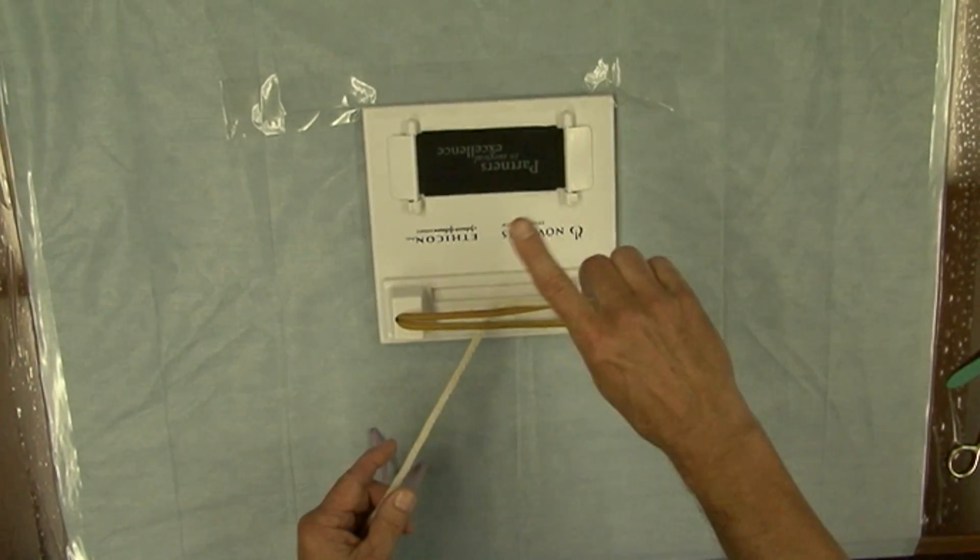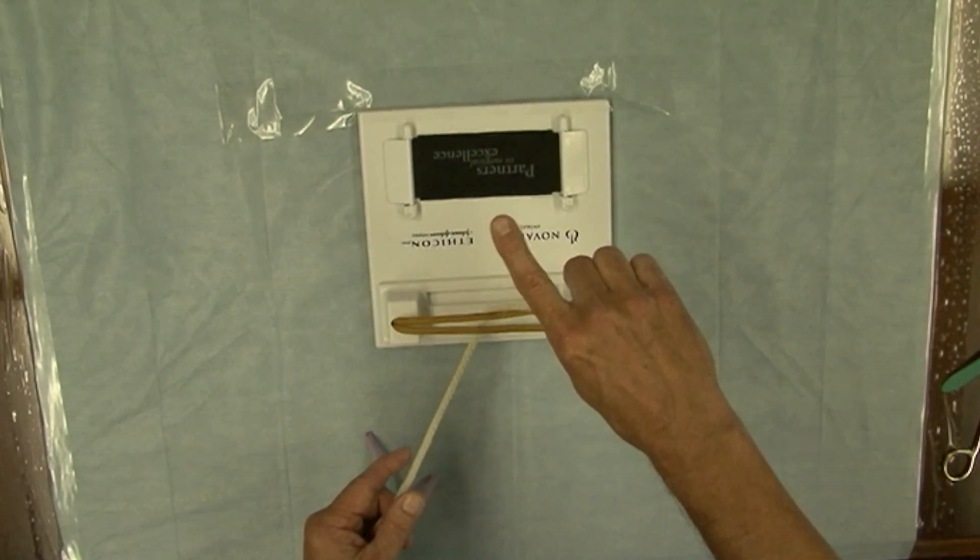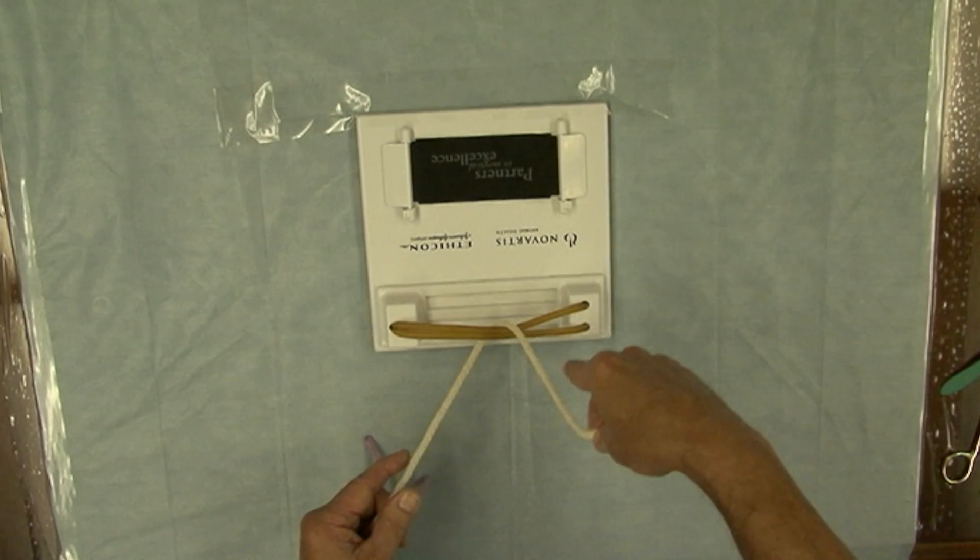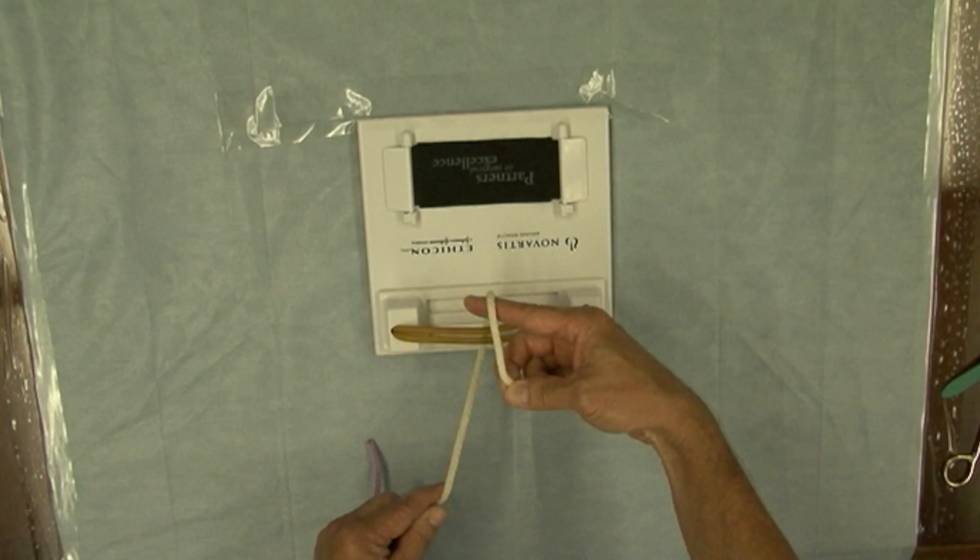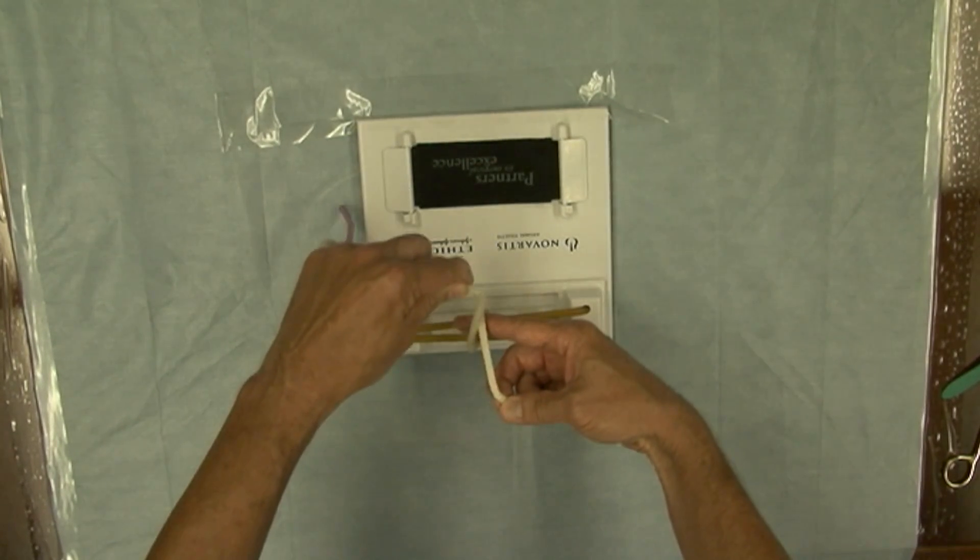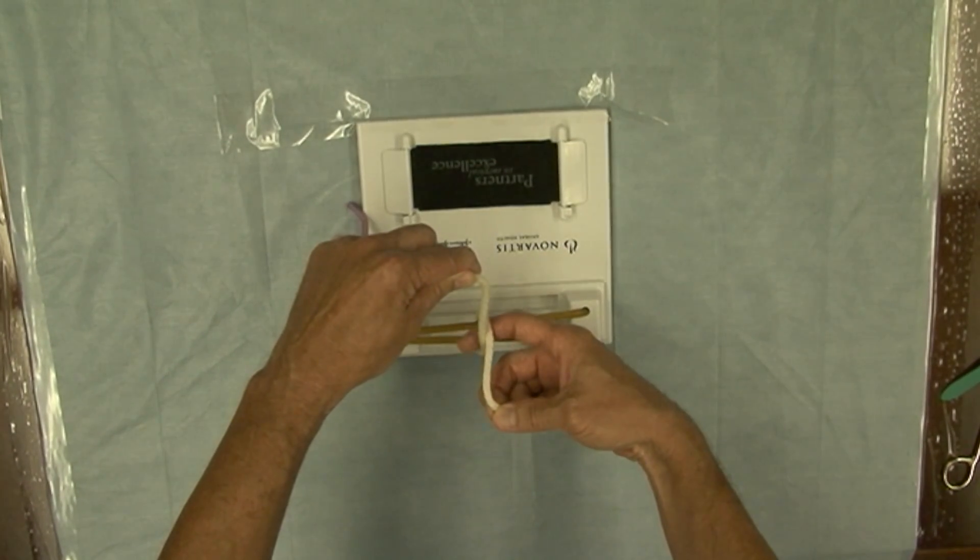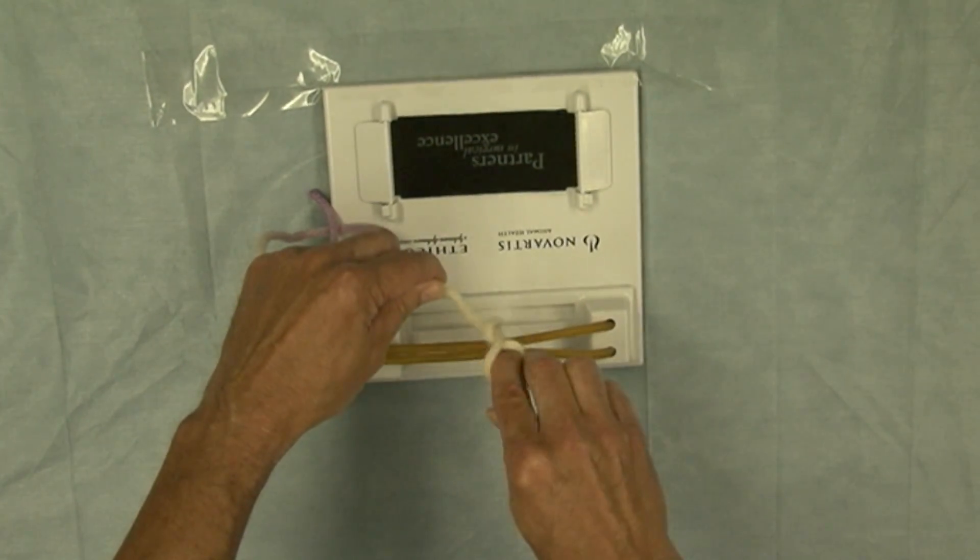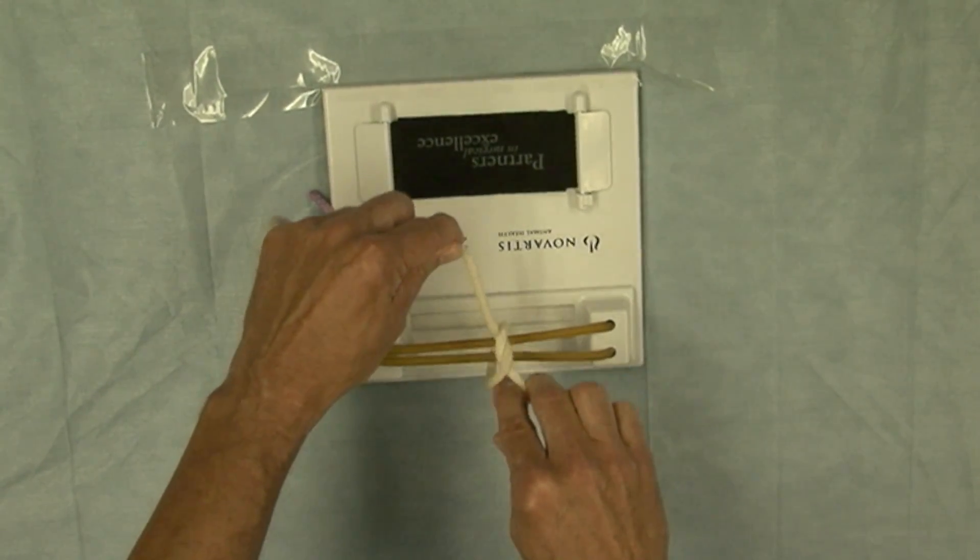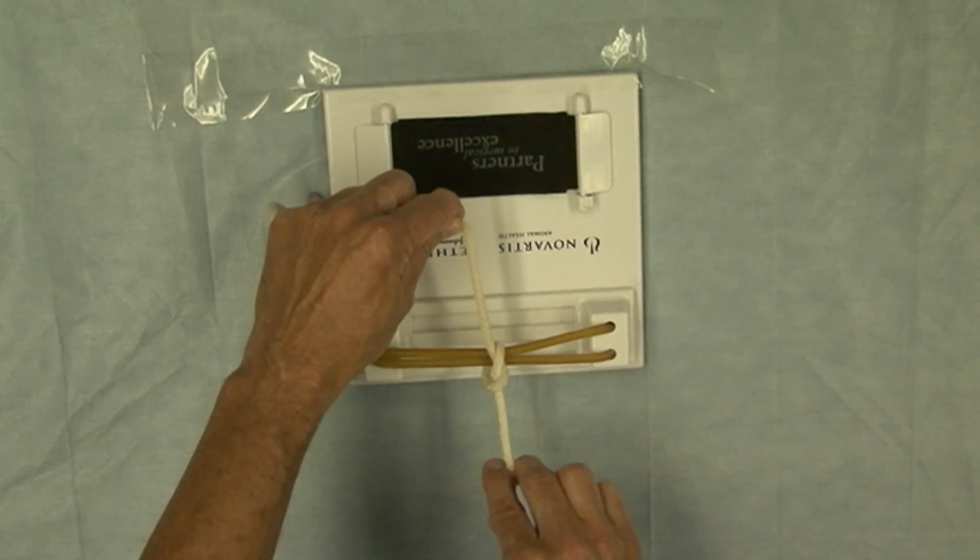So the first throw is I'm going to take my index finger, deliberately come around the suture like this, so that's a half a loop. I'm going to complete the loop and then I'm going to use my index finger to come underneath, trap, and bring the short end of the suture toward me.